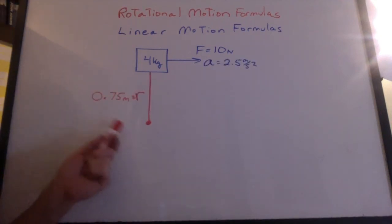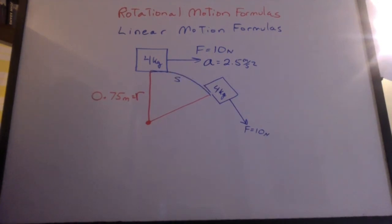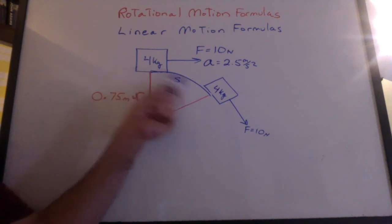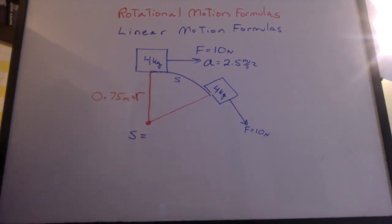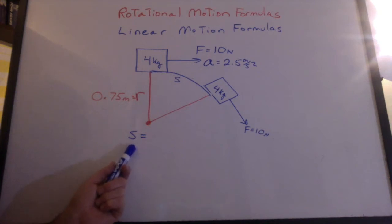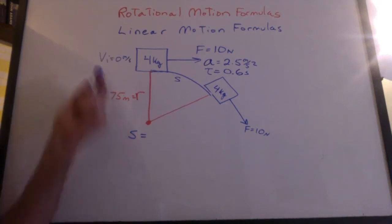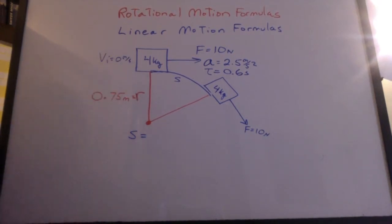Now imagine I have this mass on a massless rod of 0.75 meters. What's going to happen? I think you can imagine it's going to rotate. It's going to travel a distance s along this arc length. Could you use your linear motion formulas to figure out that distance in a time of 0.6 seconds? We'll assume the initial velocity is zero.